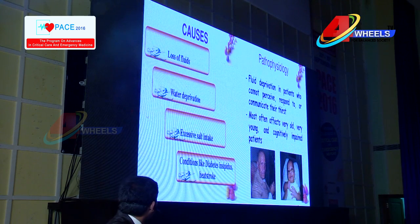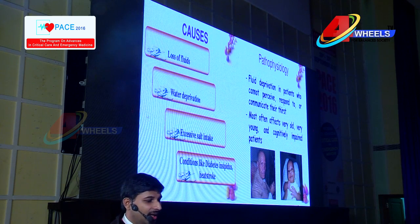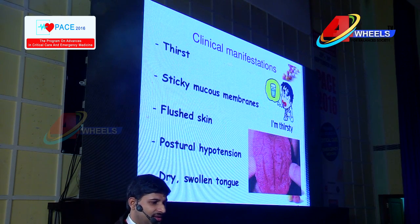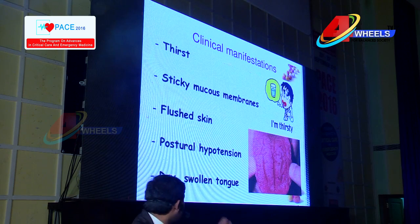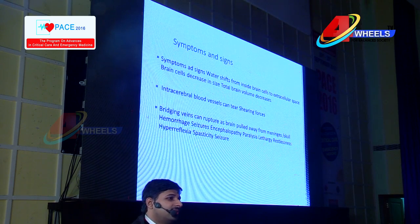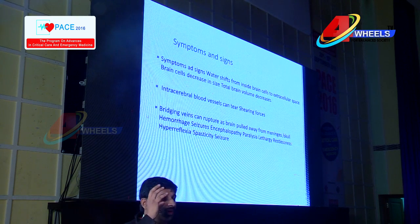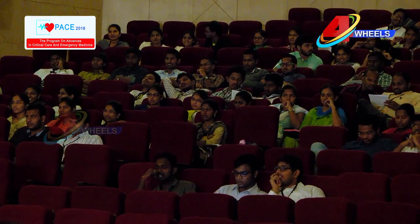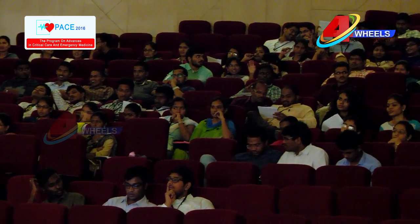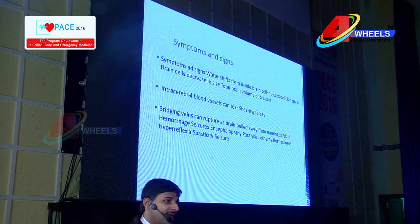Hypernatremia causes include loss of fluid, water deprivation, excessive salt intake, and conditions like diabetes insipidus and heat stroke. Clinical manifestations include thirst, sticky mucus membranes, flushed skin, postural hypotension, and dry tongue. We often ask patients to put out the tongue to examine it. Water shifts from inside the brain cells to extracellular space, decreasing total brain volume — this causes altered mental status. Intracranial blood vessels can tear and bleed, causing seizure and paralysis.